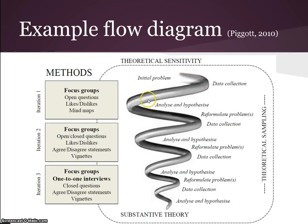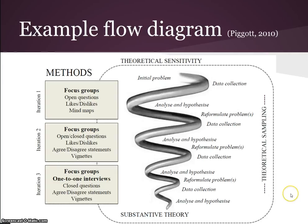The idea is that as you go through your iterations in Grounded Theory, you become more and more narrow, developing clearer and clearer ideas about what you're finding, to the point where you come to the Substantive Theory at the end. The methods I used changed as I went through. As we became more narrow, we moved to more one-to-one interviews, more closed questions, and other techniques like vignettes, where you present people with a story and ask what they think. You develop clearer hypotheses, which you test through ongoing data collection.